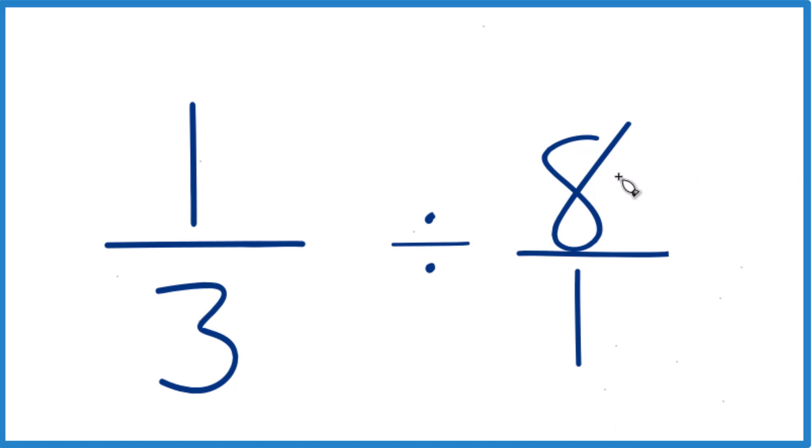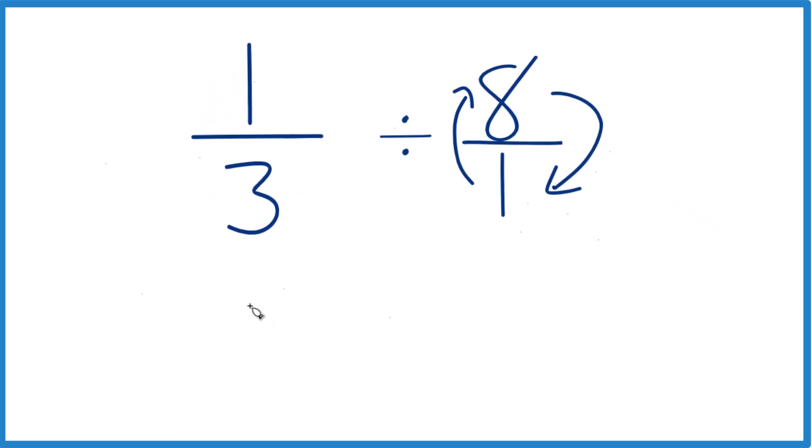Next, we're going to take the reciprocal of eight over one. So the numerator goes down to the bottom, denominator comes to the top. When we do that, we can say one-third, and instead of division, we're going to multiply by the reciprocal of eight over one. The one goes to the top, the eight to the bottom, so one over eight, that's one-eighth.